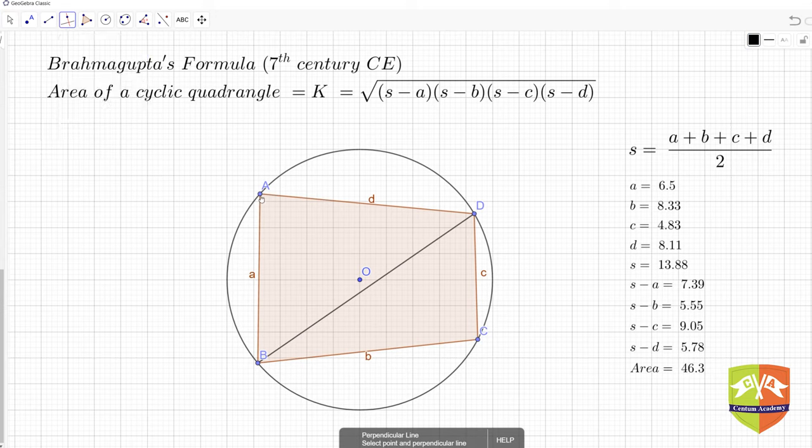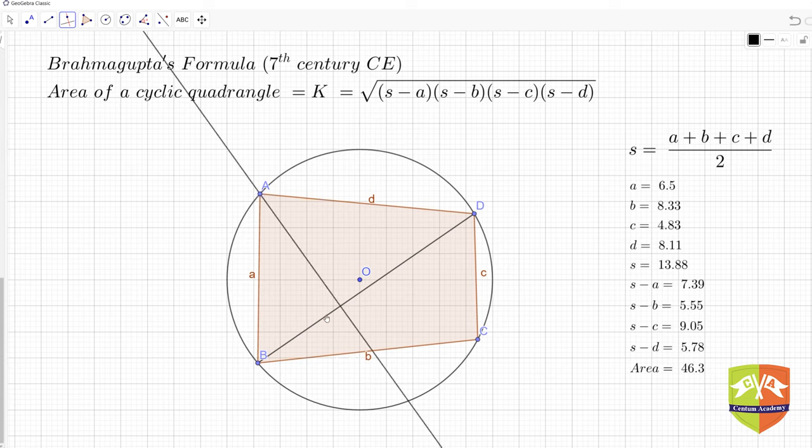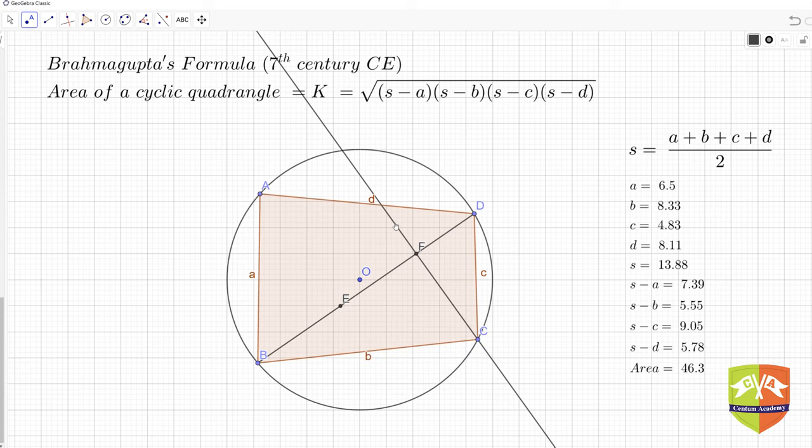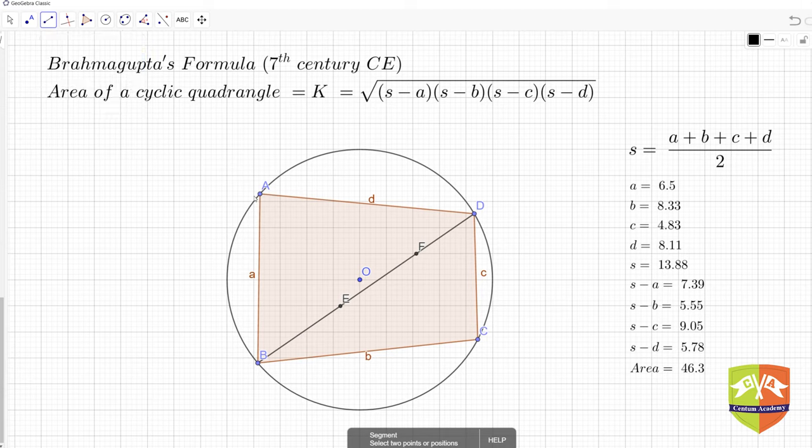Let me drop a perpendicular from A to line BD. This is the point of intersection E. Similarly I can drop another perpendicular from C to this line, and call this point F. So CF is perpendicular to BD, and AE is perpendicular to BD. Now I need to find the lengths: BD, AE, and FC to calculate the triangle areas.